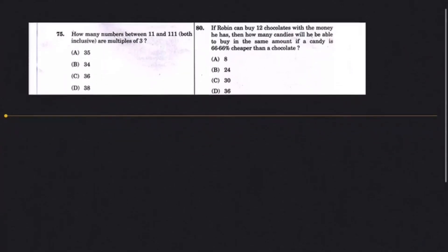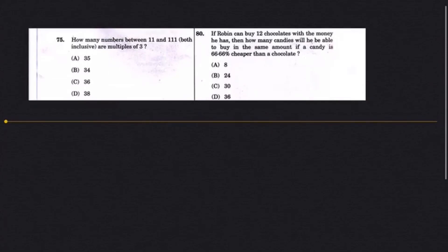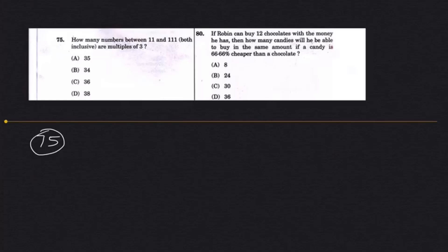Okay friends, let's continue with our 2017 NPSC question papers. In this video, we will try to solve questions 75 to 80. So the first question is: how many numbers between 11 and 111, inclusive, are multiples of 3? This question is about arithmetic progression.